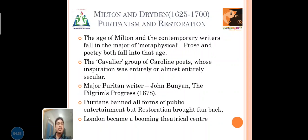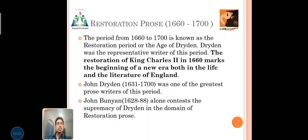The Restoration brought fun back. London became a blooming theatrical centre. The Restoration Prose: the period of 1660 to 1700 is known as the Restoration period or the Age of Dryden. Dryden was the representative writer of this period. The Restoration King Charles II returned in 1660. John Dryden was one of the greatest prose writers of this age, and John Bunyan also contests the supremacy of Dryden to dominate the Restoration prose. These are the important prose writers of the age of Restoration.